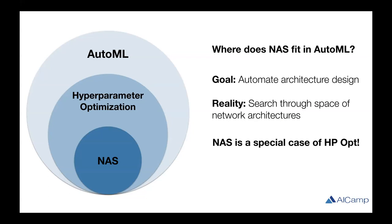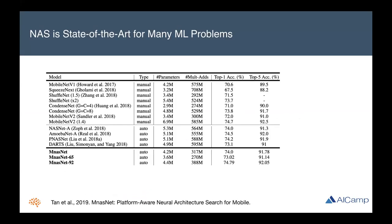Why should you care about NAS for your problems? The main reason is that NAS is state-of-the-art today for many machine learning problems. Computer vision in particular has seen a lot of research attention from NAS. A NAS architecture called MnasNet achieves better performance on ImageNet than many hand-designed architectures like ShuffleNet and MobileNet. We see similar trends in natural language processing, where a NAS-discovered transformer improved performance on NLP tasks, and also in graph learning, where NAS has seen success designing graph neural networks.